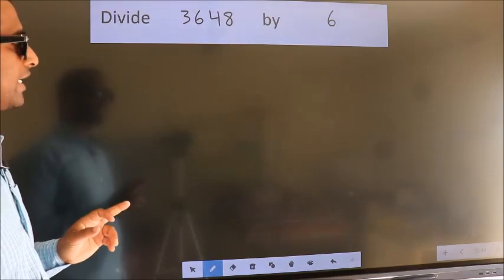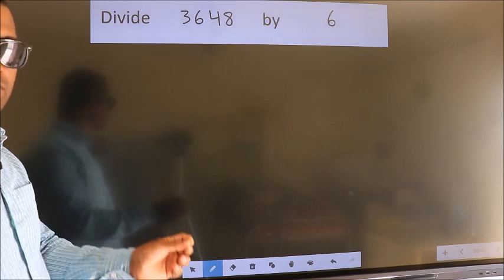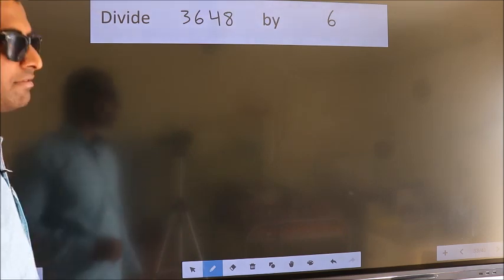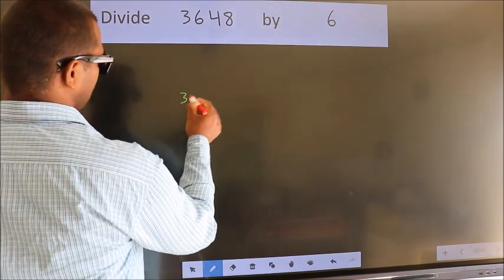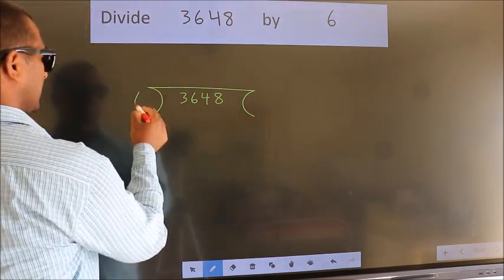Divide 3648 by 6. To do this division, we should frame it in this way: 3648 here, 6 here.